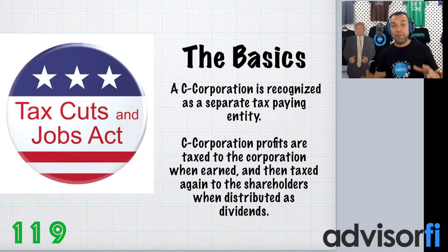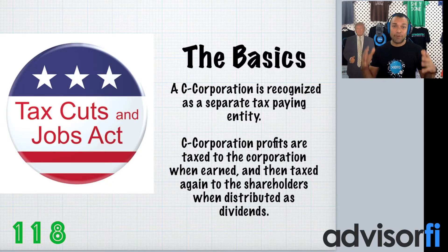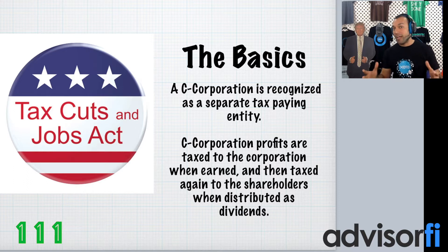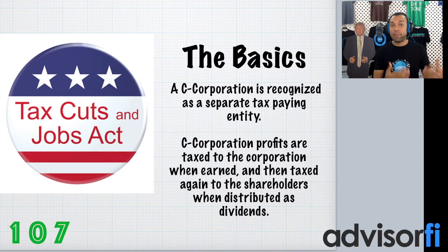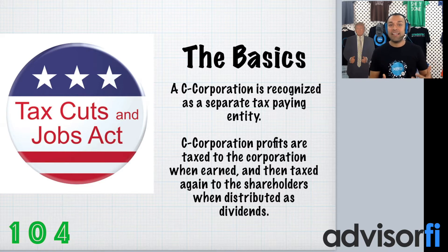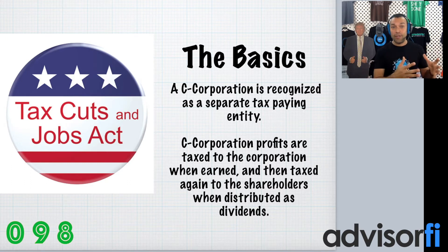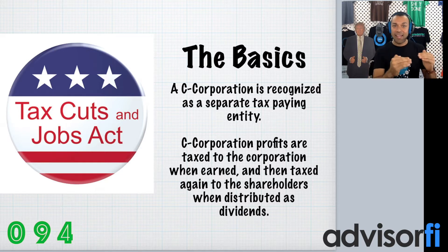All right, so here are the basics. A C corporation is basically a separate entity — it's recognized as a separate tax-paying entity. A majority of Americans who own businesses are not C corporations; they're what they call pass-throughs. Even though the tax reform did affect pass-throughs, this particular video we're actually going to talk about the entities that are not pass-throughs. A C corporation's profits are taxed to the corporation when they earn it, so when your business makes money and it has net income, it's actually taxed as a C corp at that level.